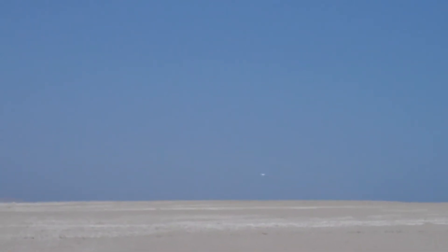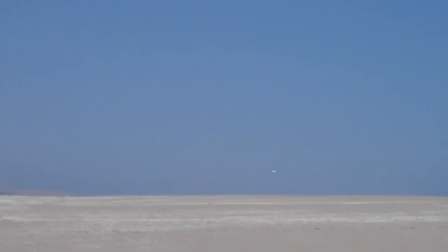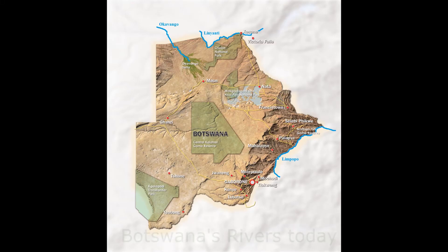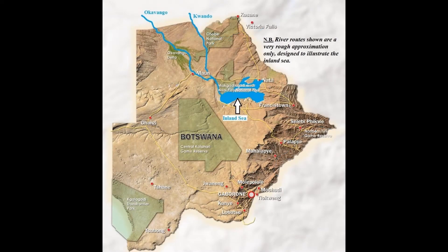About four or five million years ago — almost yesterday in geological terms — three of the major rivers of the region, the Okavango, Kwando, and Zambezi rivers, all flowed along completely different courses than they do today. In the past, these rivers almost certainly flowed southwards into a large inland depression in the heart of the Kalahari.